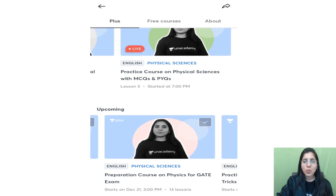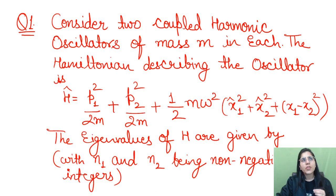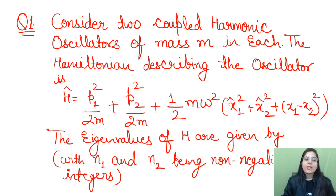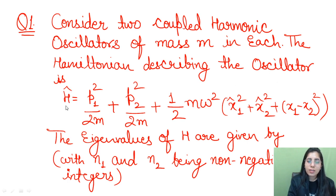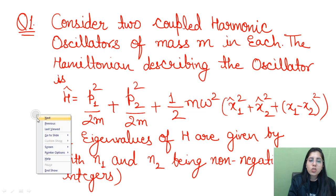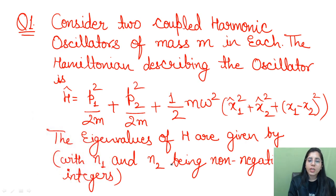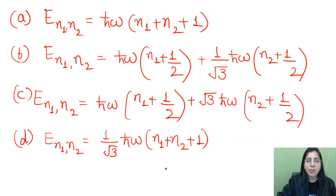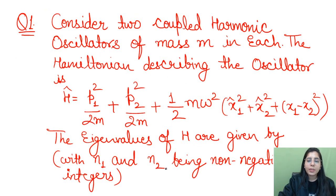Now let's quickly start a discussion about the questions in today's session. These are some tricky, important questions — all are going to be very important ones. So let's start the discussion. The first question is: consider two coupled harmonic oscillators of mass M each. The Hamiltonian describing the oscillators is given. You just need to find the eigenvalues of H. The information about N1 and N2 is present in the options. You need to find the eigenvalues of the Hamiltonian.